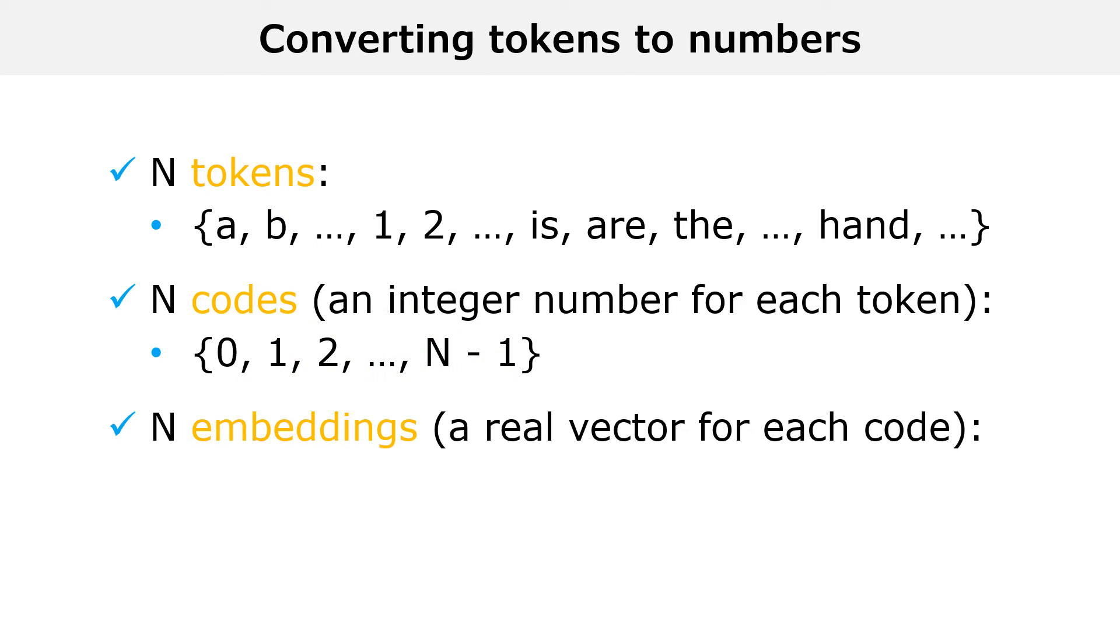The integer number assigned to a given token is often called the token code. Second, we typically assign a d-dimensional vector of real numbers to each token. Let us denote these vectors by e sub 0, e sub 1, etc. These vectors, which are also used to represent the tokens, are called token embeddings. They can either be randomly drawn from some probability distribution, for example, a standard multivariate normal distribution, or their values can be adjusted during the training of the model. Once token codes and embeddings have been assigned, blocks of texts can be represented by sequences of integer numbers or by sequences of real vectors. Then it is easy to formulate the next token prediction problem as a statistical problem.